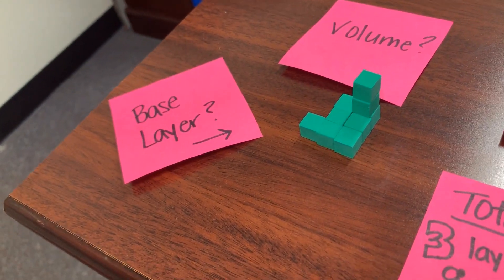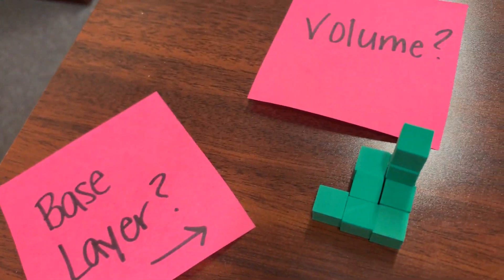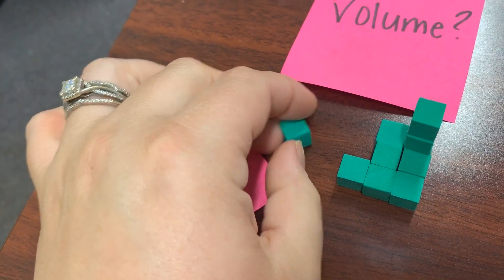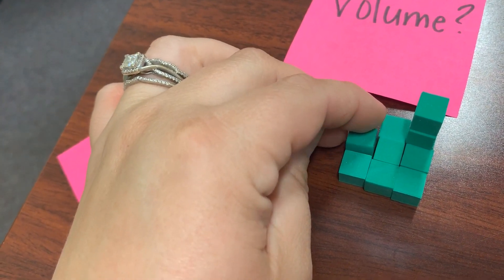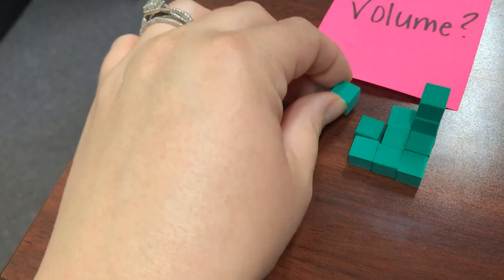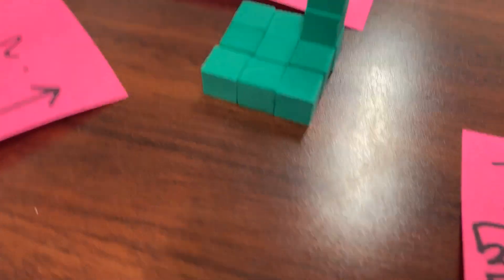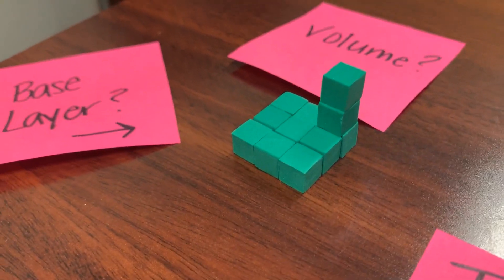I want to complete that array of three long and three wide. So it looks like I'm missing some right here on this outer edge. So I bet if I fill those in, we can complete the base layer. There we go. All right, so now the base layer is finished. Base layer is the bottom layer.